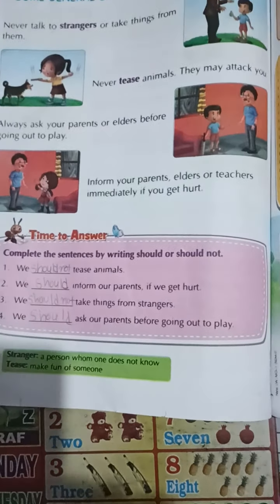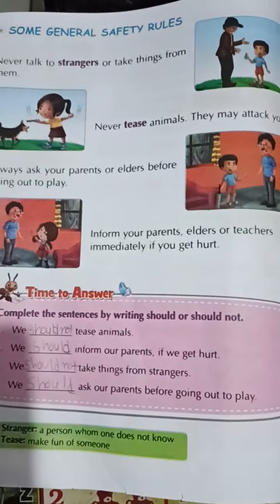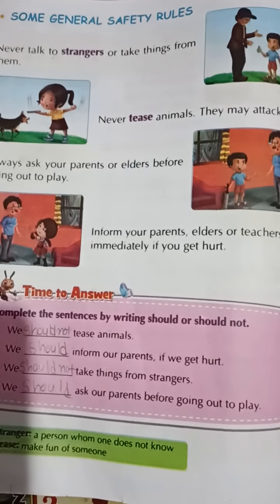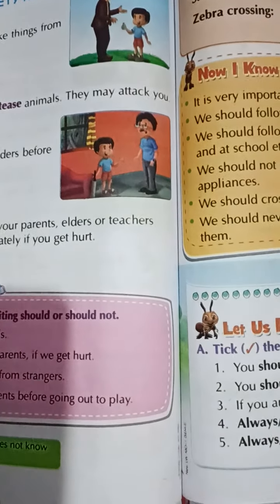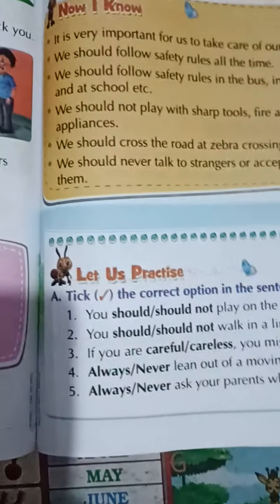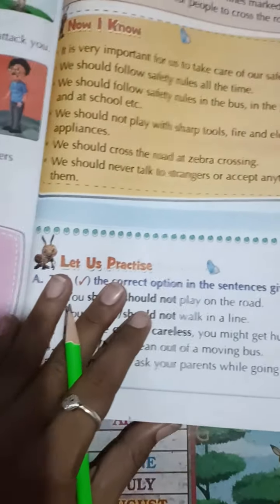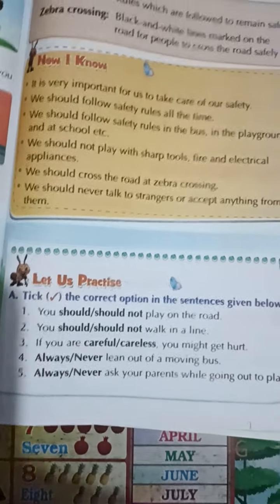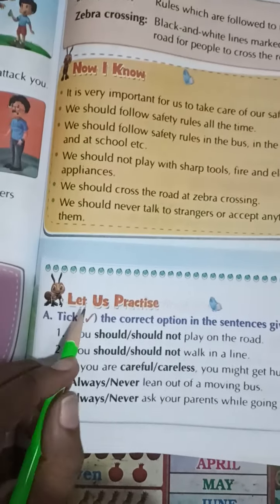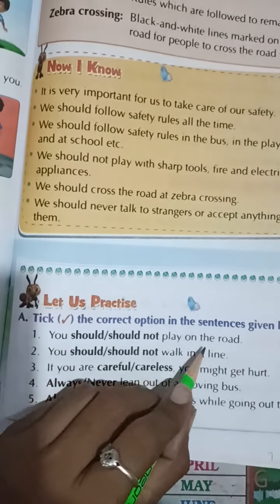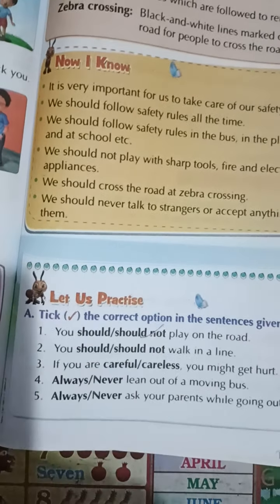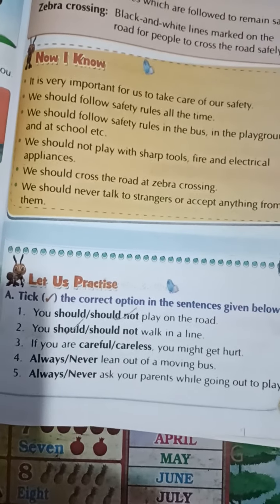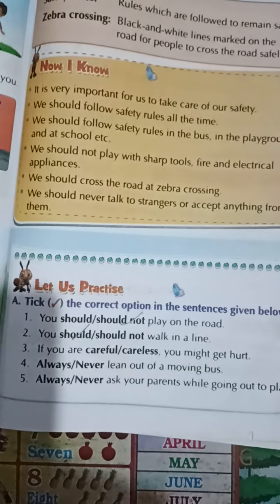We have learned safety rules for school, home, on the road, and while traveling by bus. Now let's practice: tick the correct answer. You should not play on a road. You should walk in a line. If you are careless, you might get hurt.